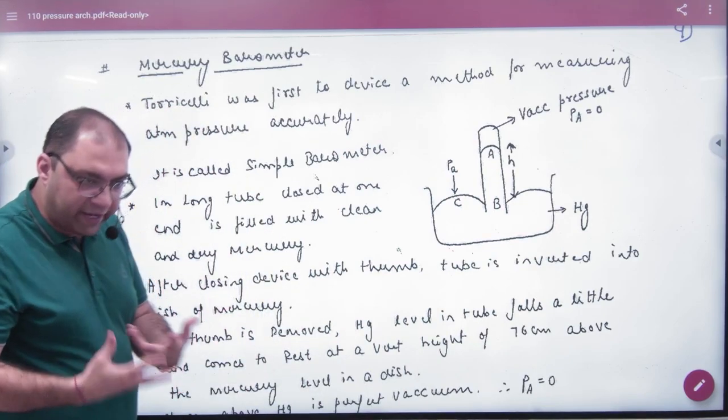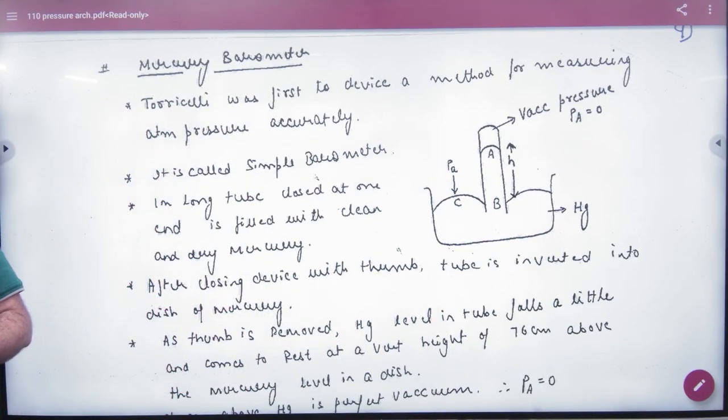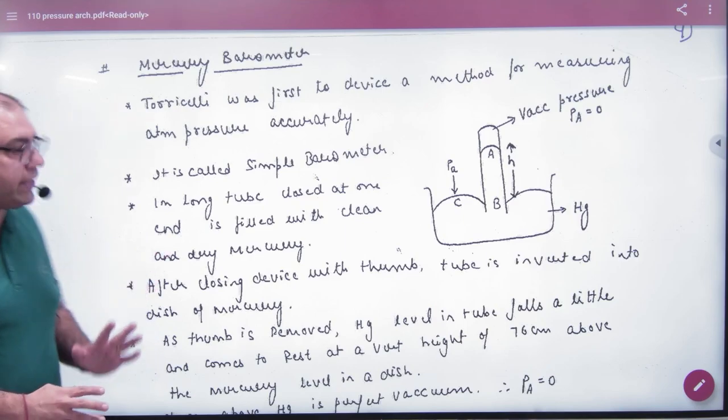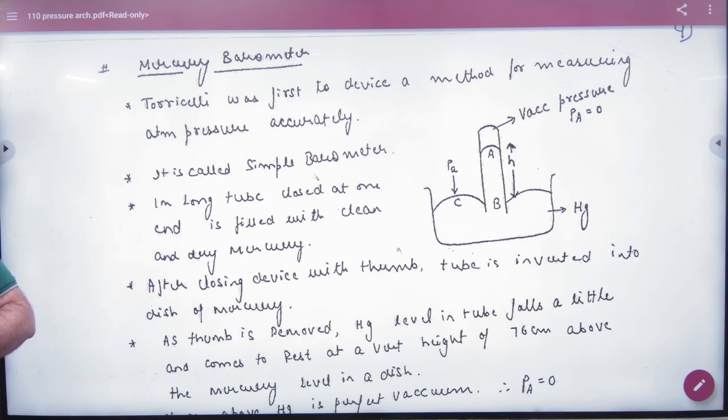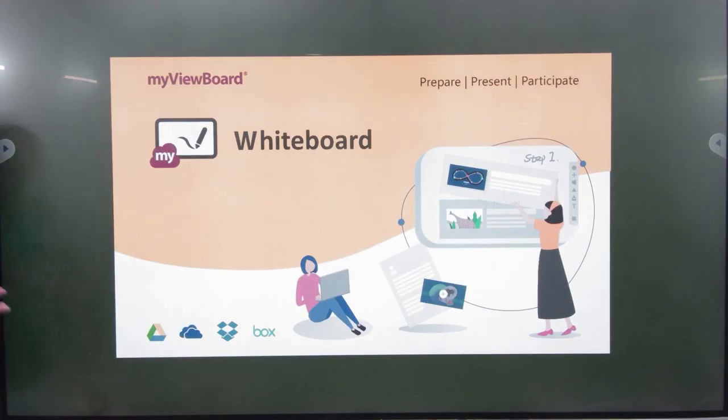So what experiment did he do? A device that can measure pressure is what we call a barometer. And the liquid that we use in barometer is mercury. It is called mercury barometer. So in mercury barometer, or simple barometer, Torricelli did an experiment.